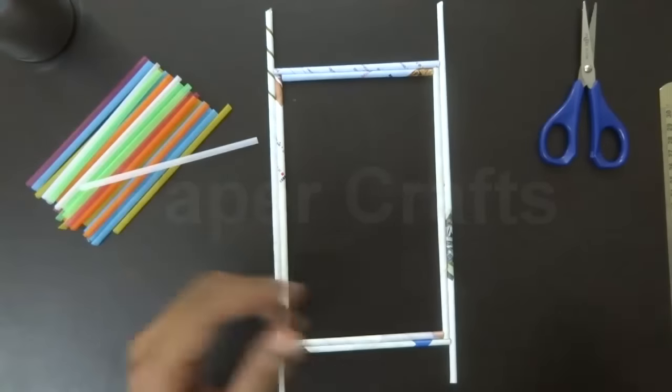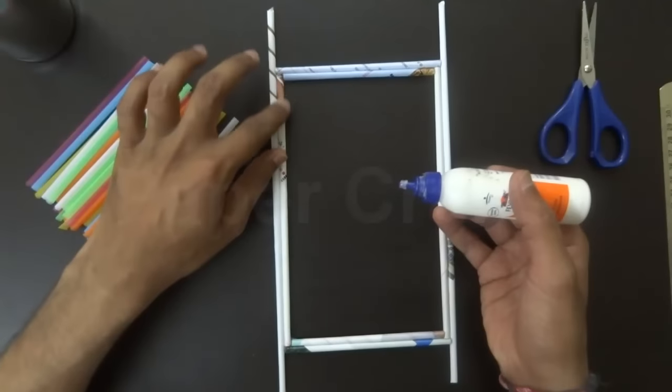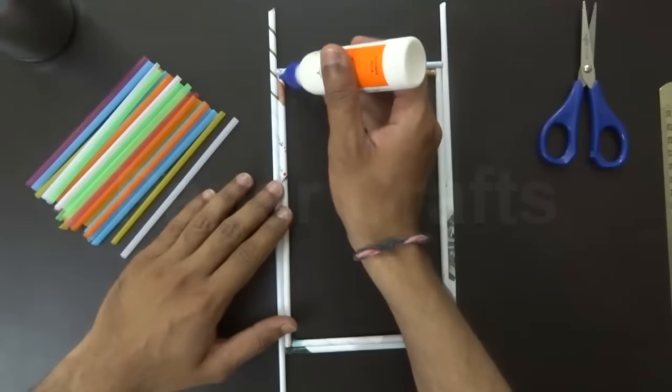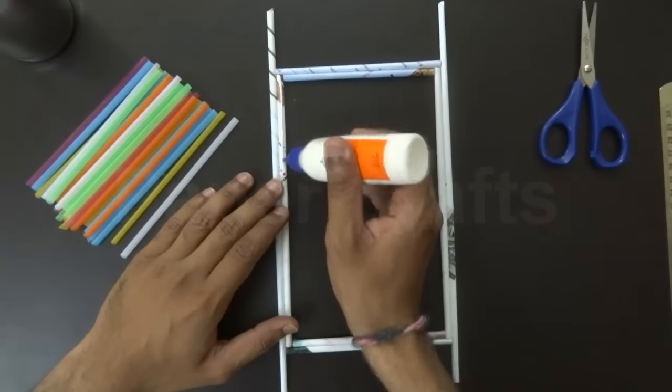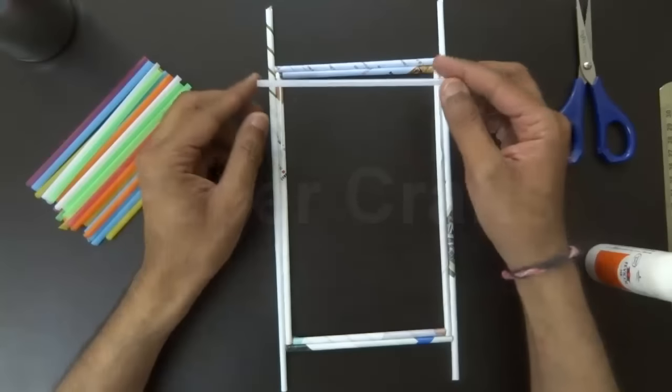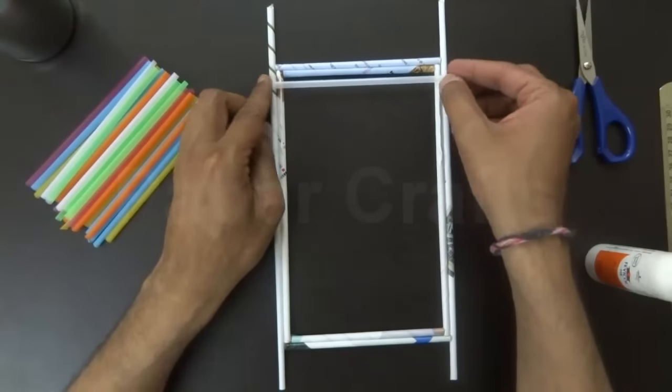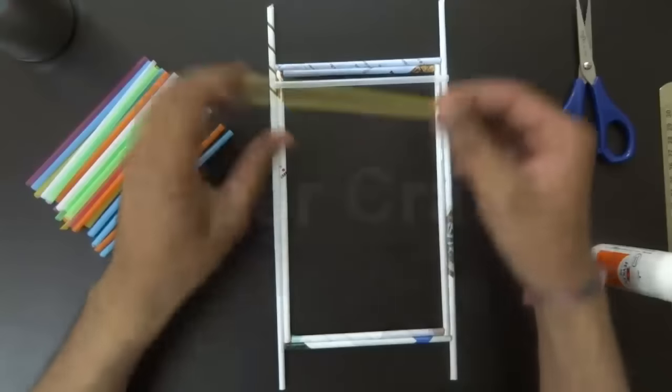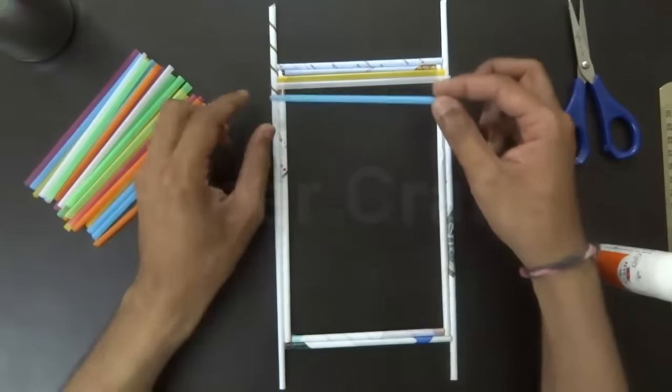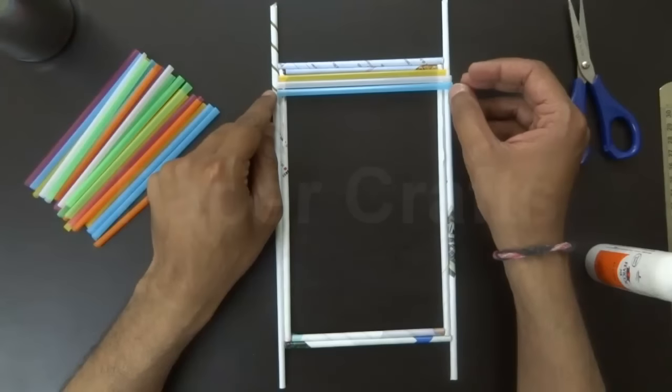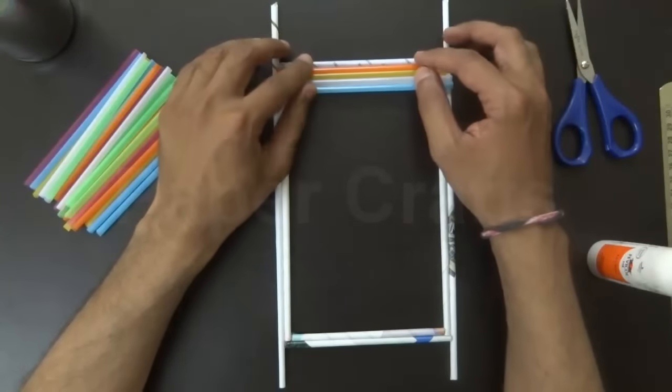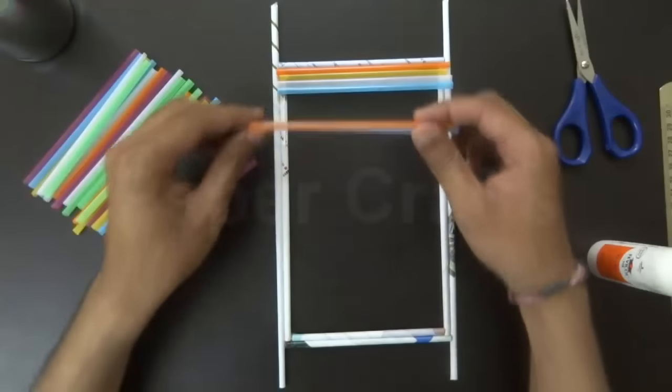Now use glue on the inner sticks and start pasting these straws on this rectangular shape. You may use any pattern of color. You can just paste these sticks randomly.